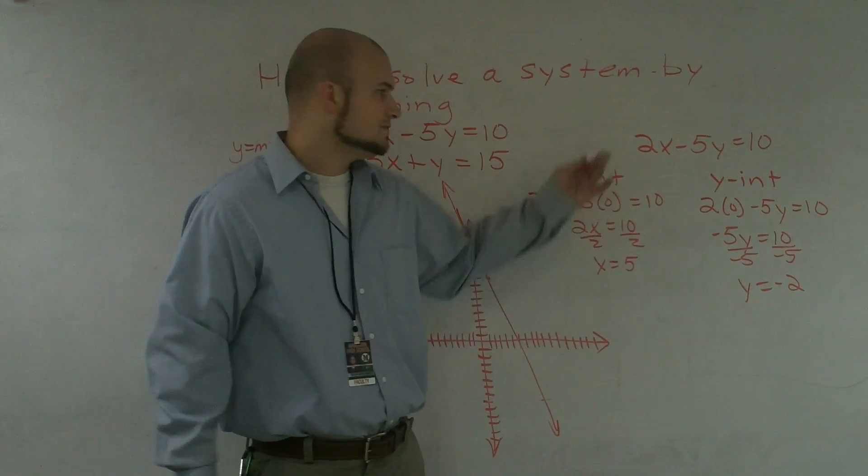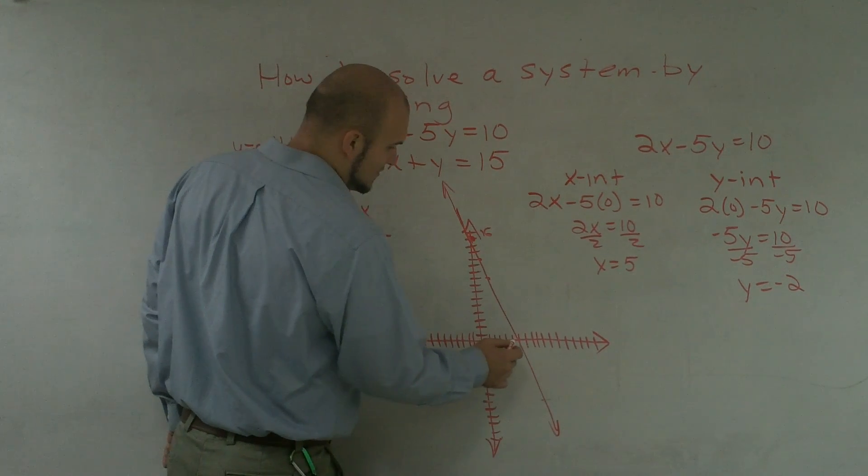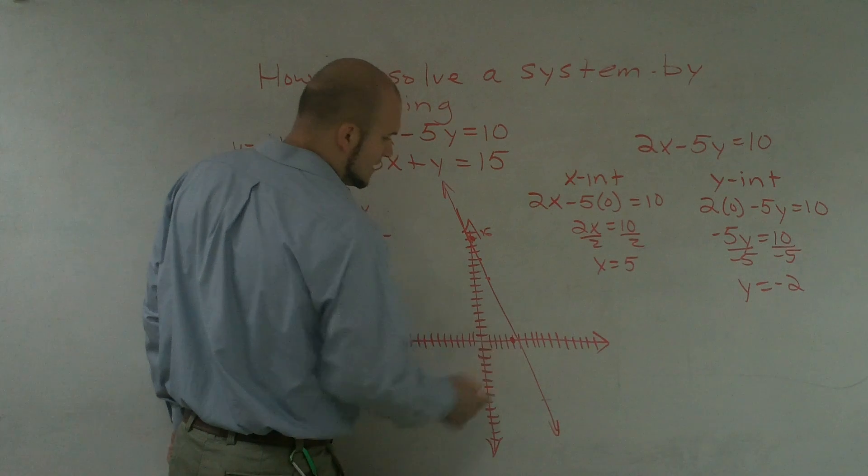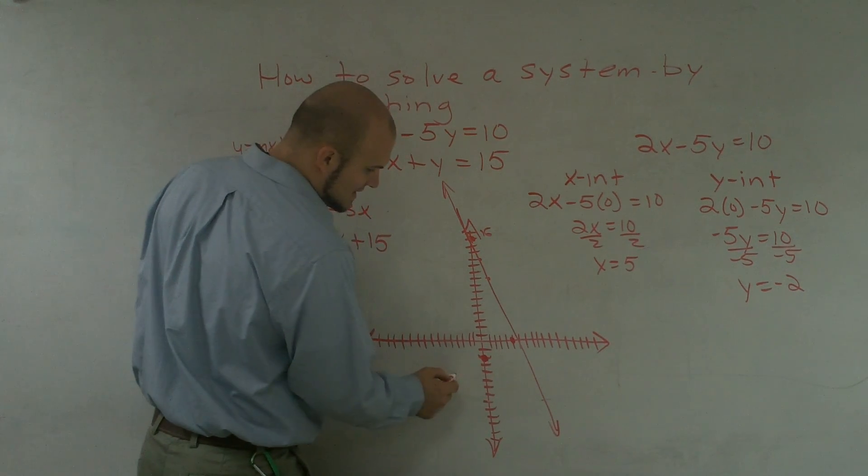And then, for this one, if you solve for your x and y-axis, the same thing. You just go to x = 5. 1, 2, 3, 4, 5. And then, y = -2. And then, all I do is I connect those two points.